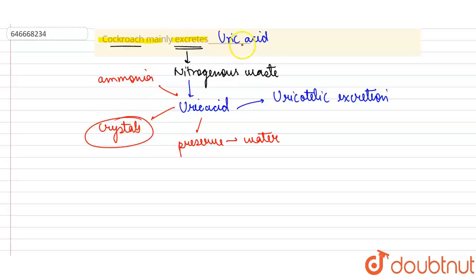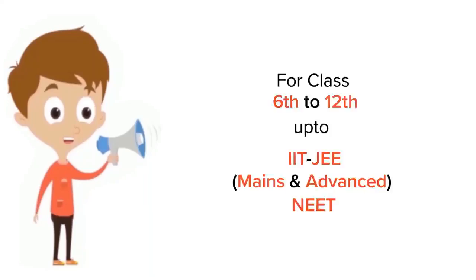Uric acid is produced in form of crystals, so the answer is uric acid here. Thank you.